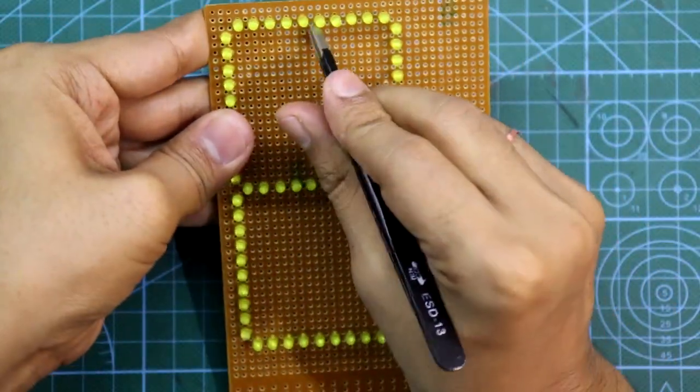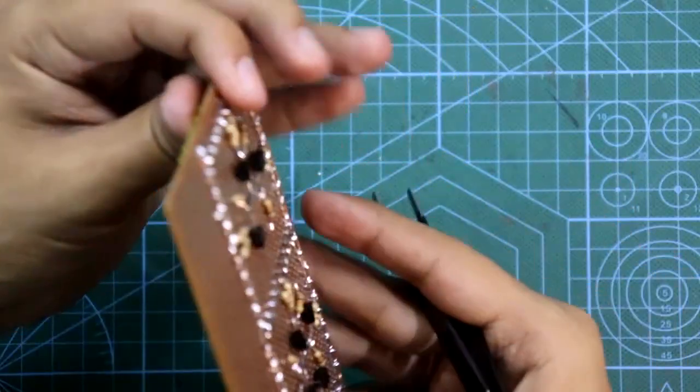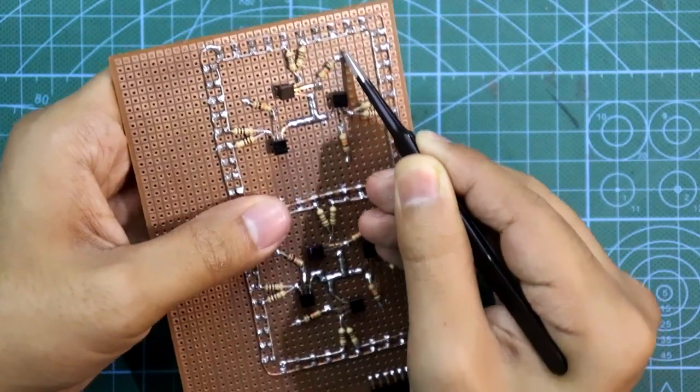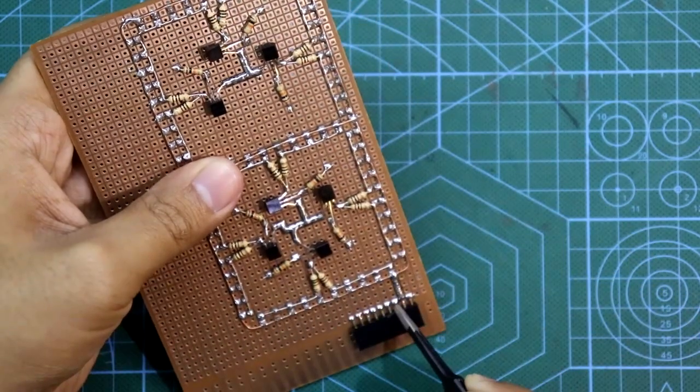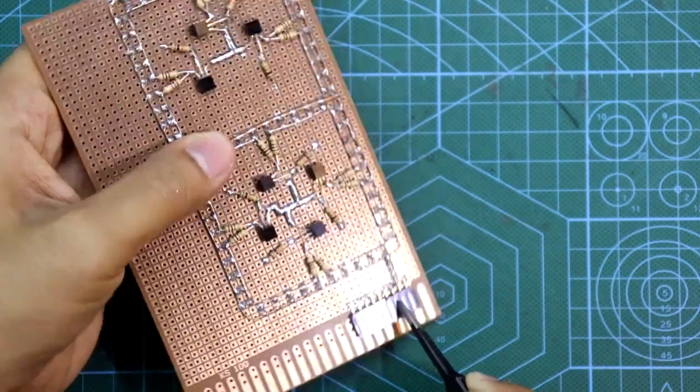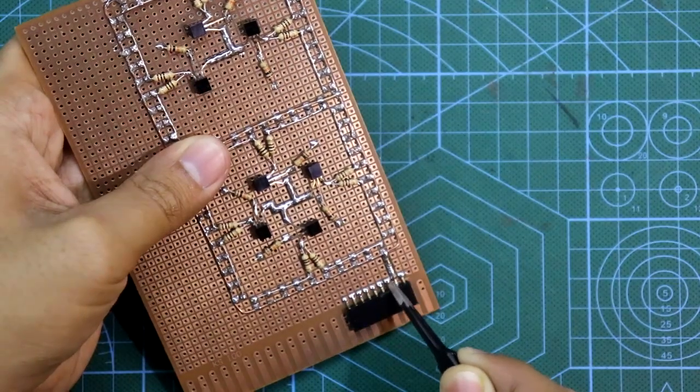As this segment is segment A, so this resistor should be connected to here in this point. That is segment A.